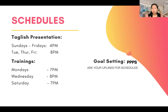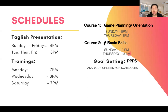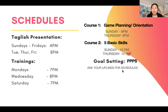We have schedules for game planning — Course 1 — on Sundays and Thursdays at 8PM. Next is Course 2, the five basic skills training, also on Sundays and Thursdays at 8PM. After completing those courses, you can do the goal setting for PPPS, where you'll learn how to hit the PPPS. Ask your uplines for the schedules and links — they're usually the same and also shared in your group chats.